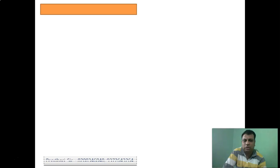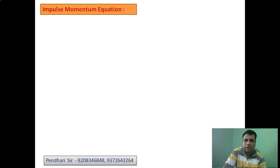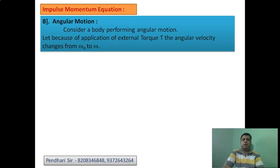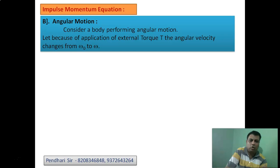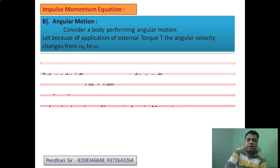Now applying the same equation for angular motion — consider a body performing rotational motion due to torque T; its angular velocity changes from ω₀ to ω. Here, ω₀ is the initial angular velocity and ω is the final angular velocity. Just as we started with Newton's second law F = ma for linear motion, here on the same lines we use T = I·α.